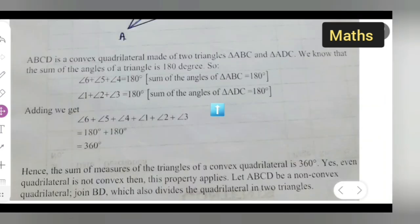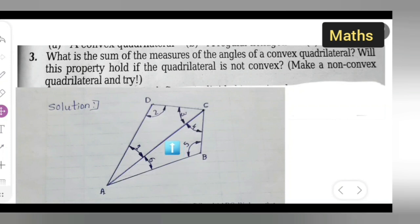ABCD is a convex quadrilateral made up of two triangles, triangle ABC and triangle ADC. We know that the sum of the angles of a triangle is 180 degrees. We are counting all these angles. The quadrilateral is divided into two triangles, and the sum of each triangle is 180.